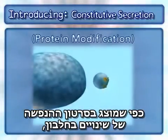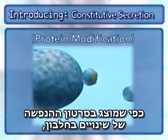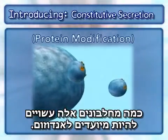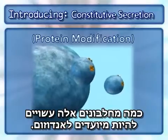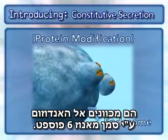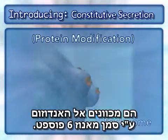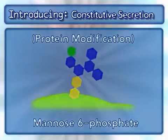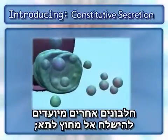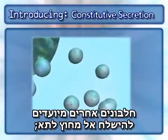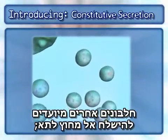As seen in the protein modification animation, some of these proteins can be destined for the endosome. They are targeted to the endosome by a specific mannose phosphate signal. Other proteins are destined for delivery outside of the cell.